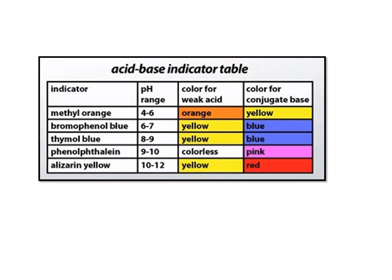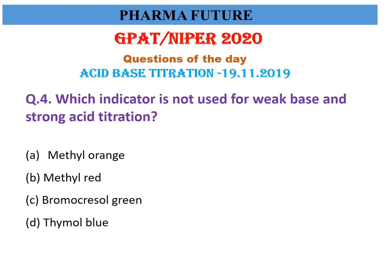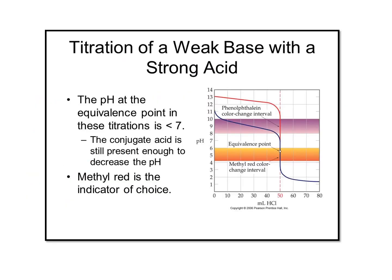Fourth question: which indicator is used for weak base and strong acid titration? Strong acid means HCl; weak base means ammonia and similar compounds. The right answer is methyl red. Methyl red is the indicator of choice because the pH at the equivalence point is less than 7 — the conjugate acid is still present enough to decrease the pH, as shown in the graph.